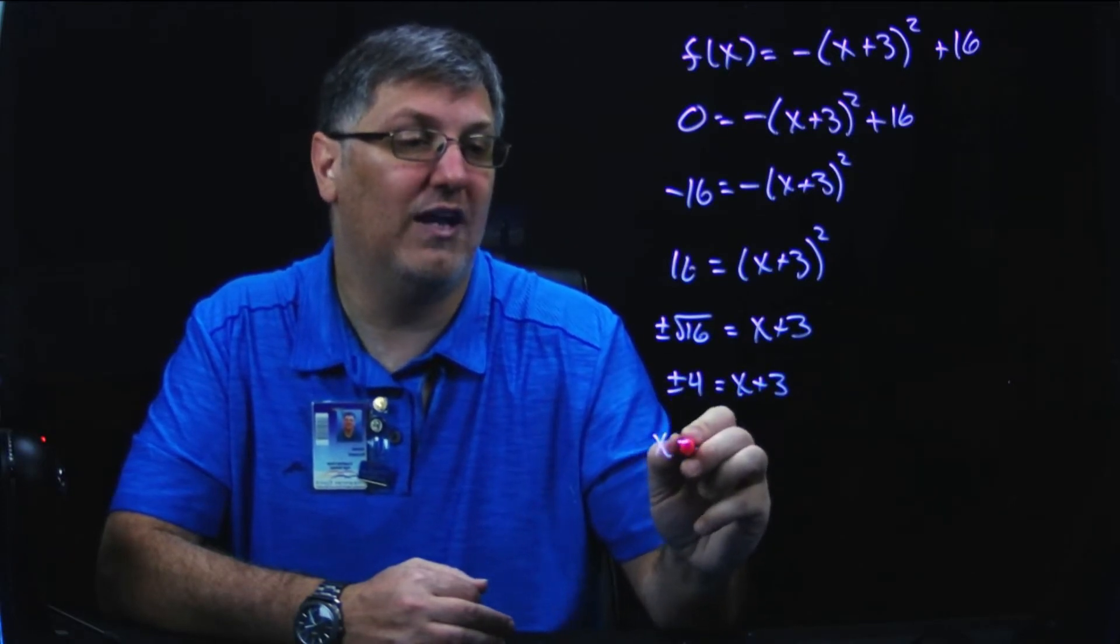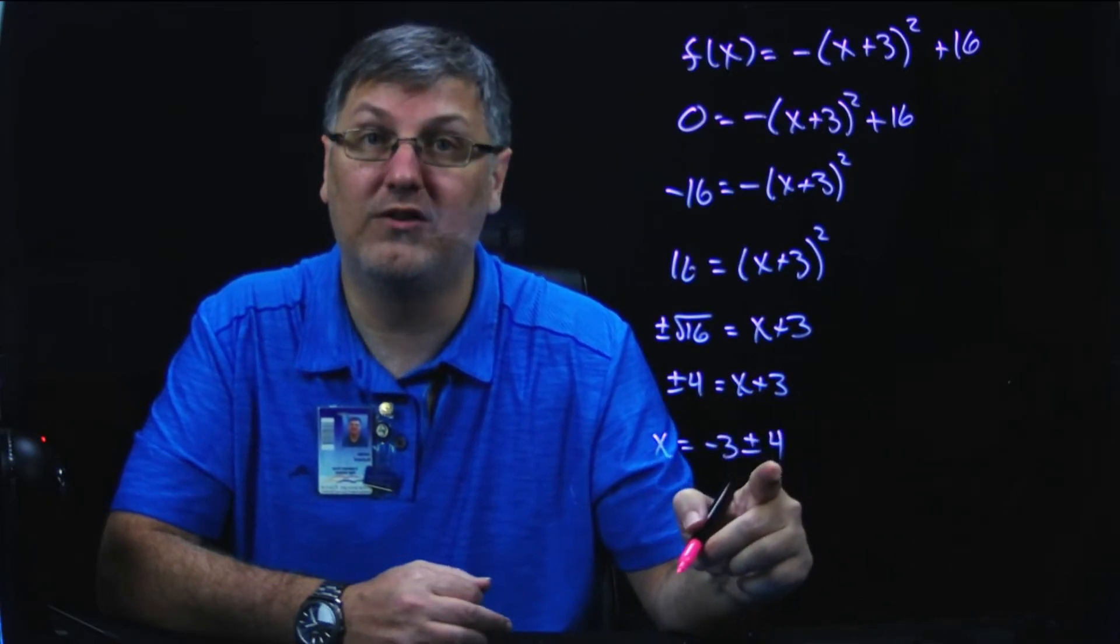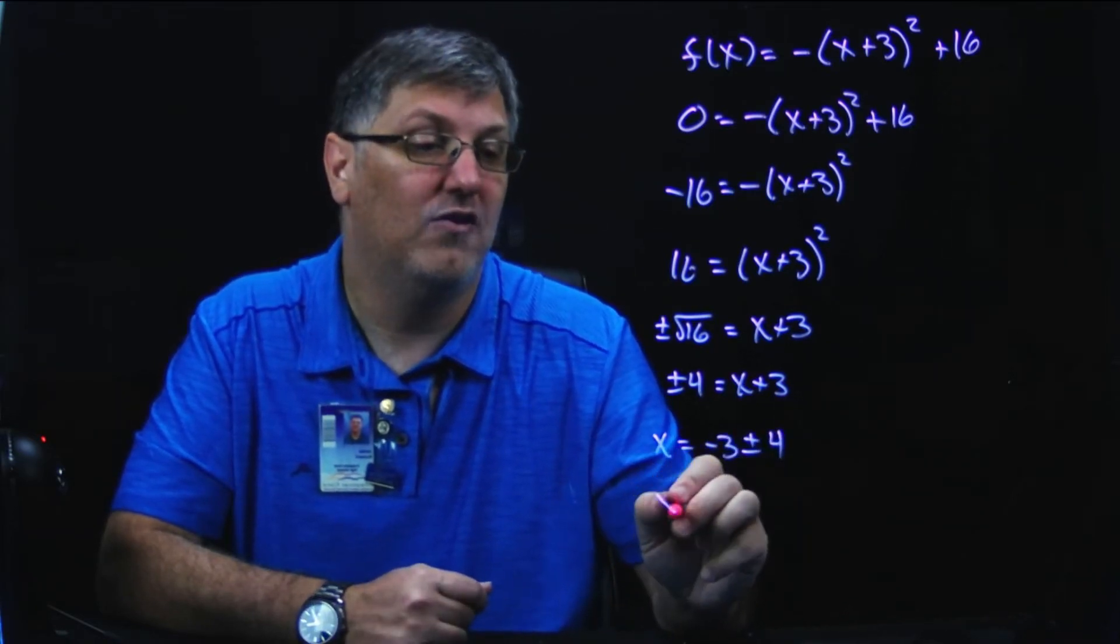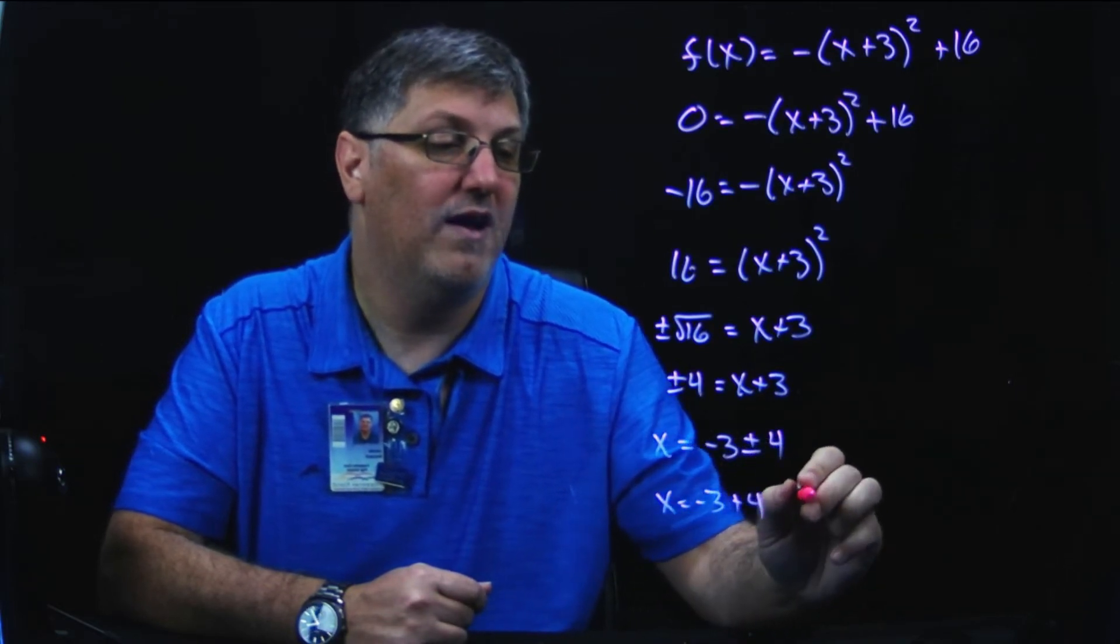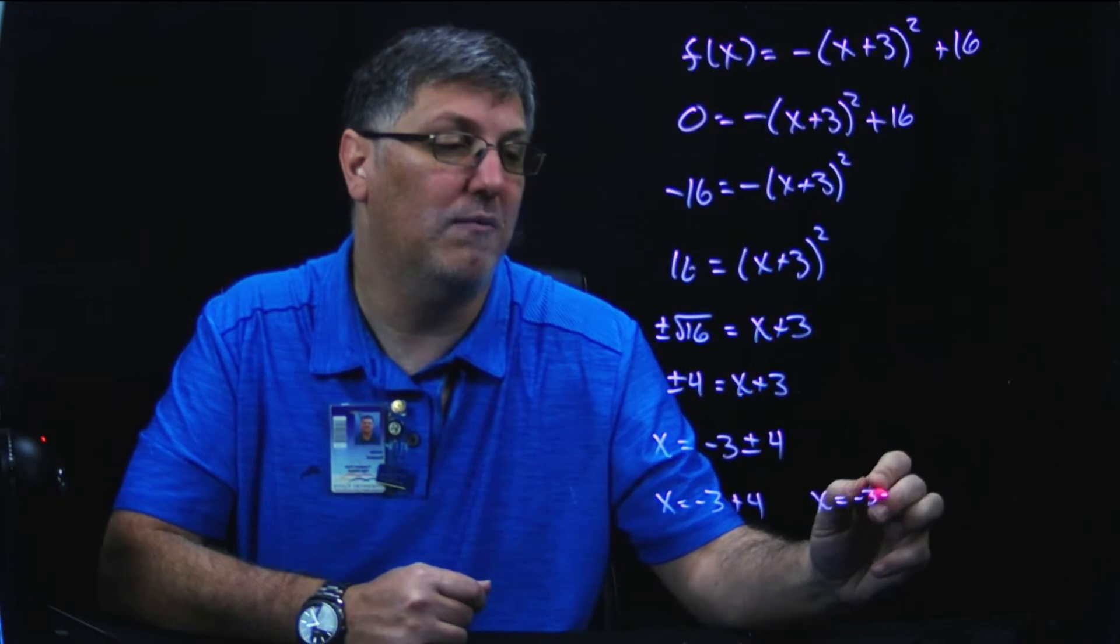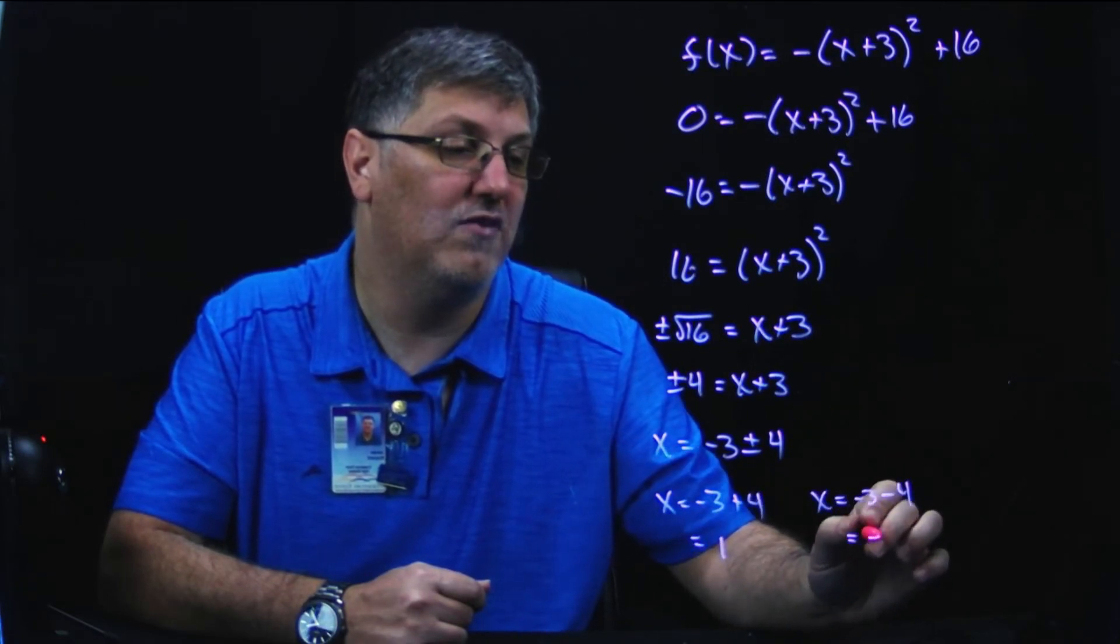Subtract 3 from both sides, and I got x equals negative 3 plus or minus 4. Well, I want to split this up and find my two x values. I really have x equals negative 3 plus 4, and I have x equals negative 3 minus 4. When I simplify these, this is 1, and this is negative 7.